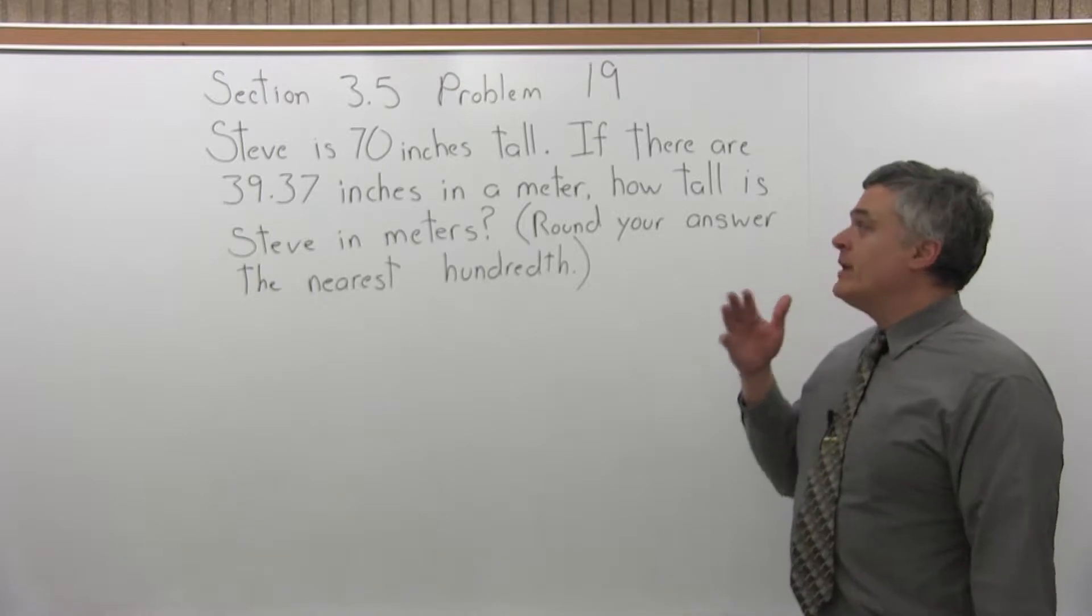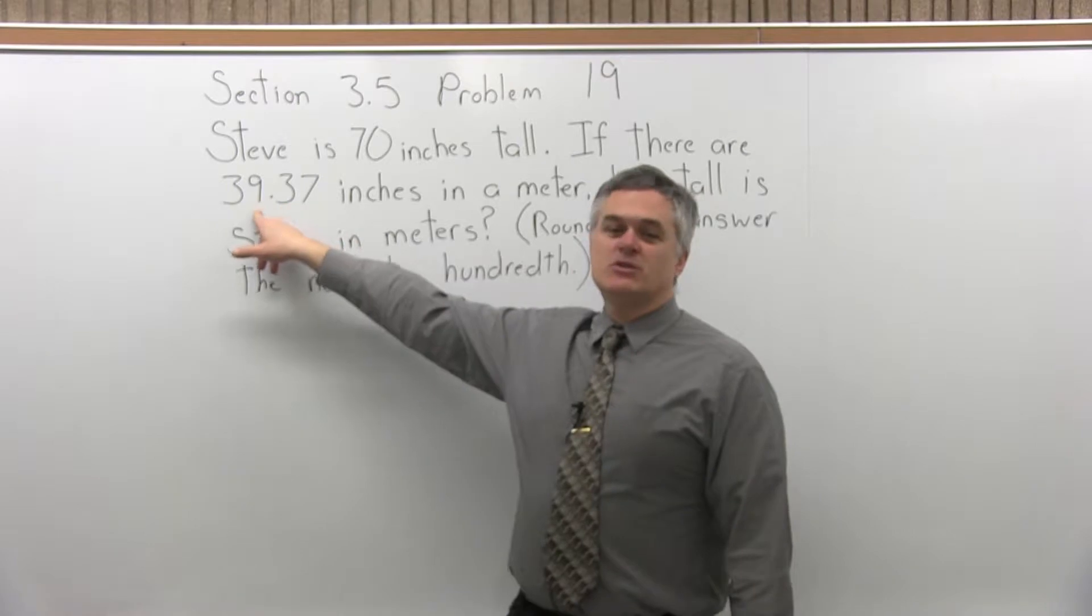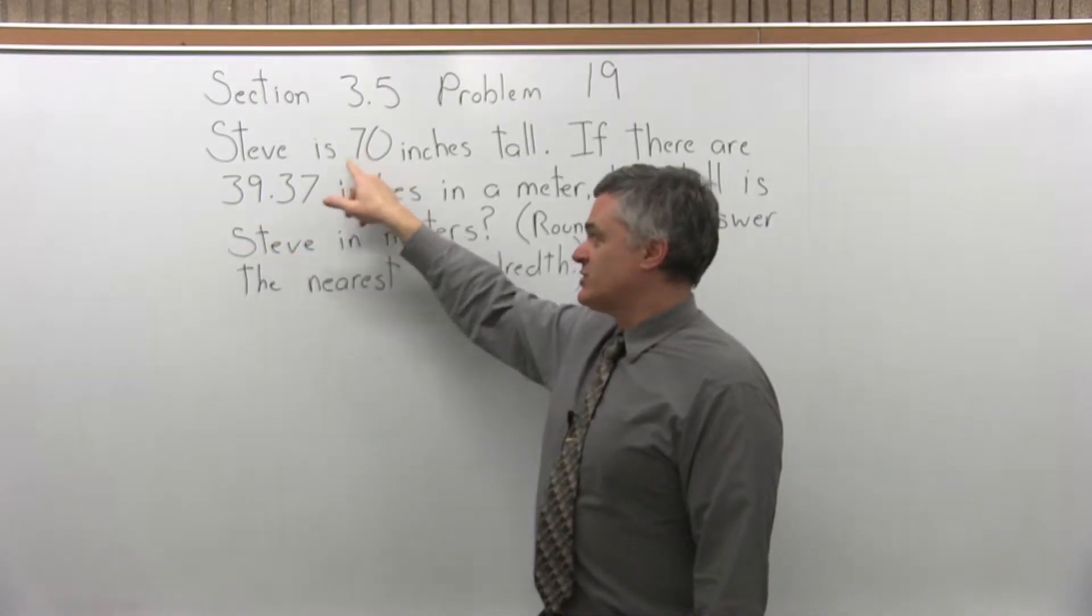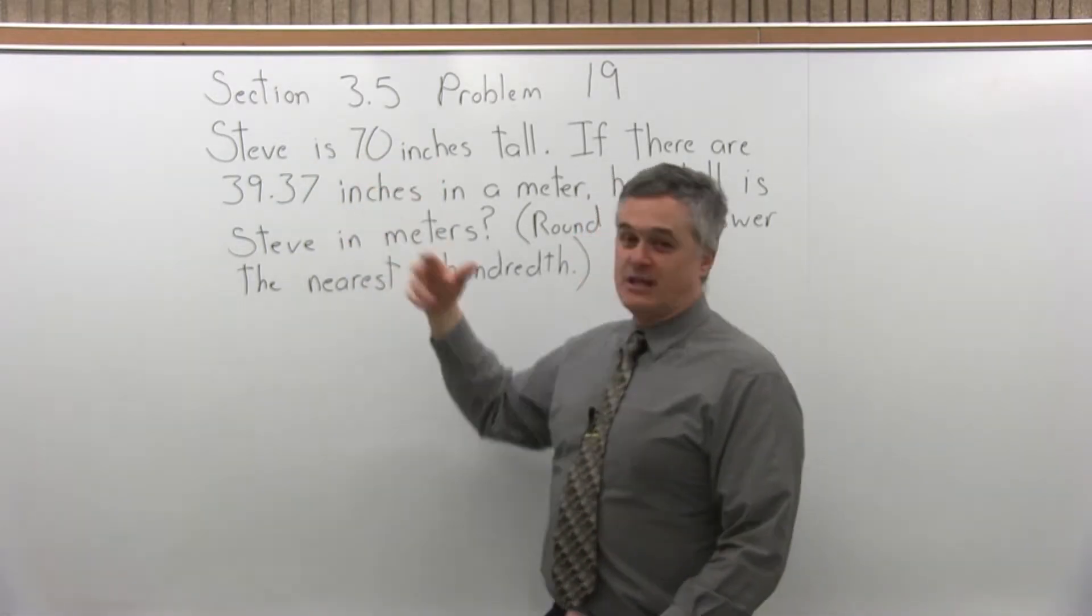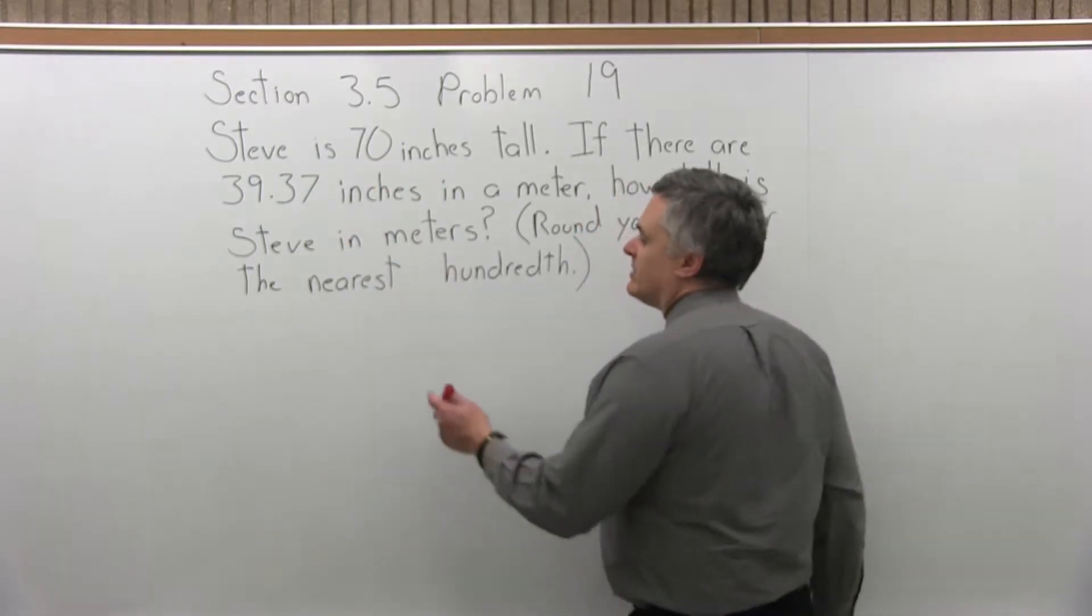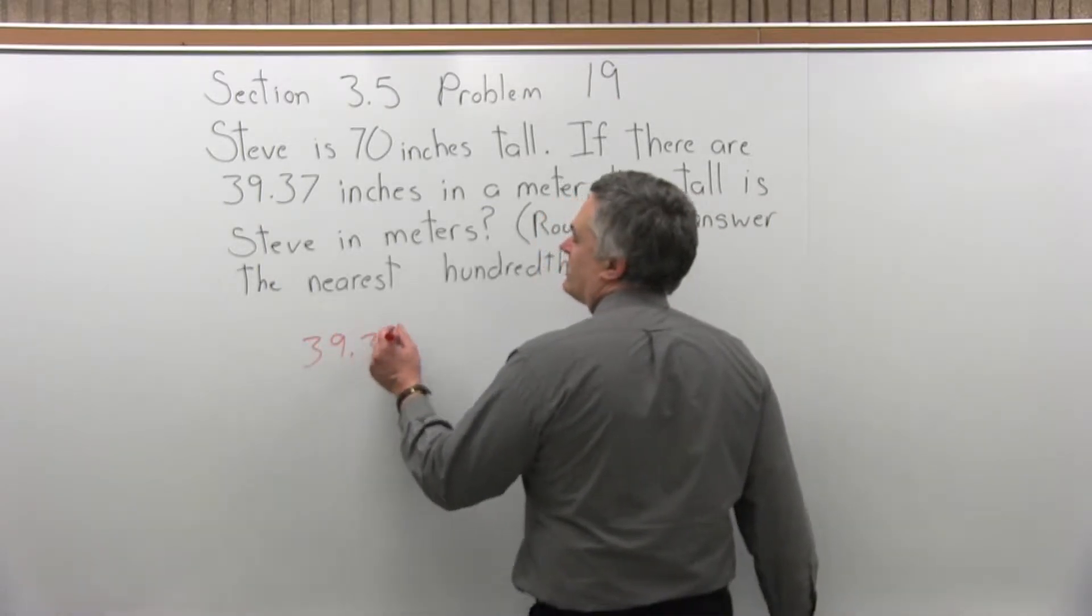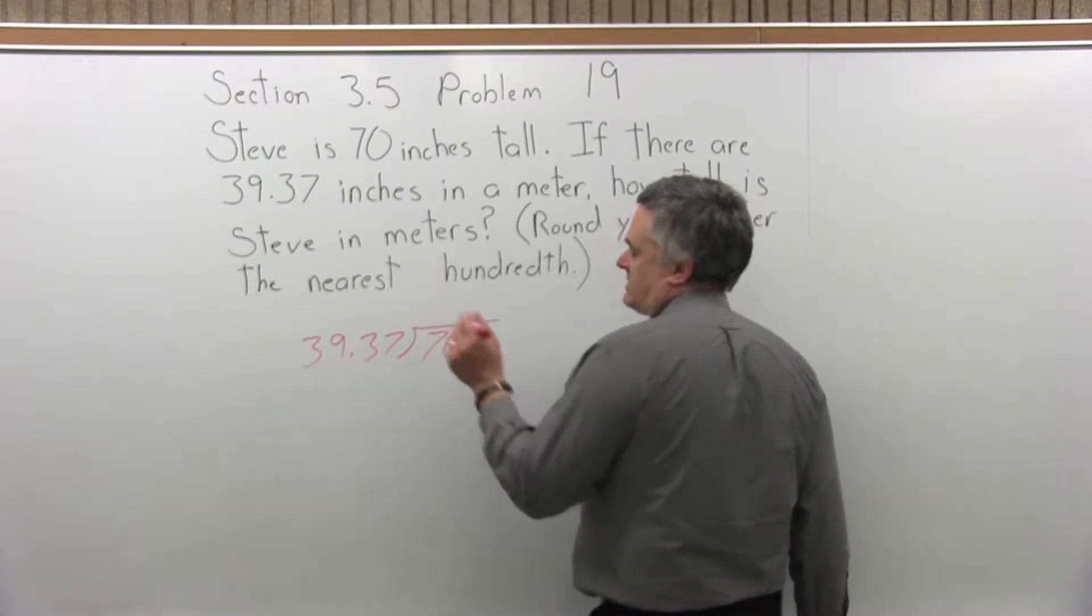So what we have to do is divide. And why am I dividing? If Steve, say a meter is almost 40 inches. If Steve was 40 inches tall, he'd be 1 meter tall. If he was 80 inches tall, he'd be about 2 meters tall. And how am I getting that? The 40 divides into 80 twice. So what I have to do is divide the 39.37 into 70, the 70 inches with Steve's height.